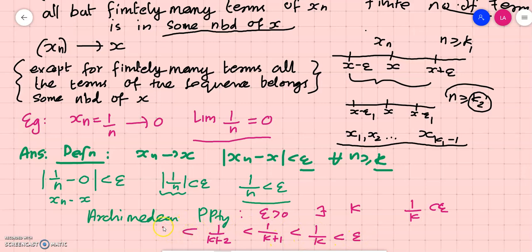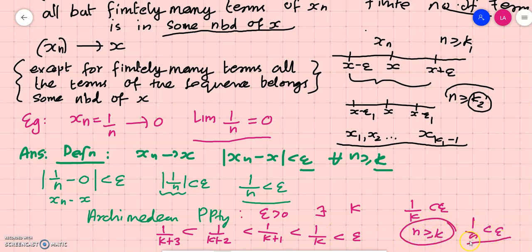And 1/(k+3), which is less than 1/(k+2), which is less than 1/(k+1), which is less than 1/k, is less than epsilon. We can proceed like this. So after the number k, we can say that 1/n is less than epsilon. This is true by the Archimedean property.